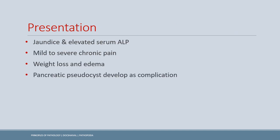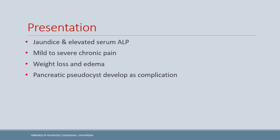Chronic pancreatitis patients present with epigastric pain and nausea/vomiting, but also jaundice and elevated ALP — because chronic ductal obstruction can lead to bile duct obstruction and gallstones. Patients may have mild to severe chronic pain. Weight loss is a classical feature. Edema may occur due to protein malabsorption. Pancreatic pseudocysts are a complication of chronic pancreatitis.